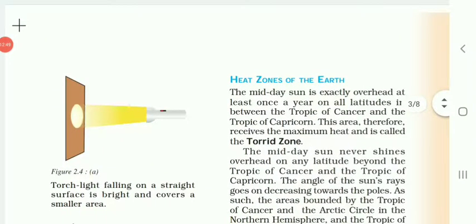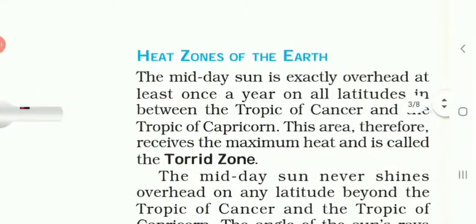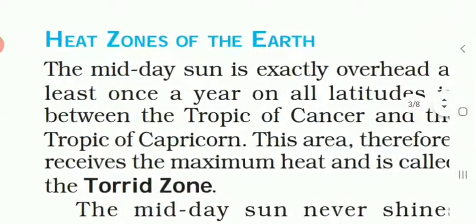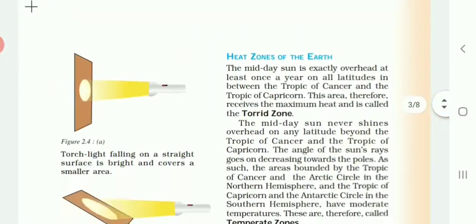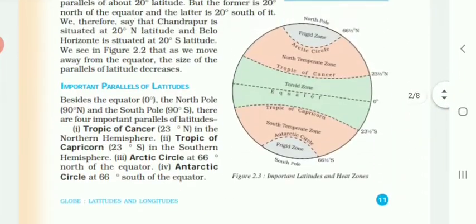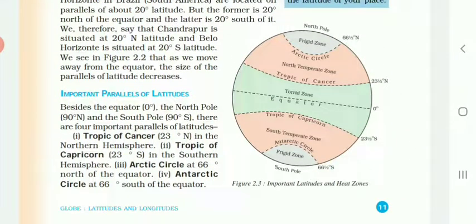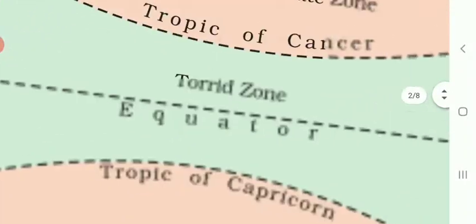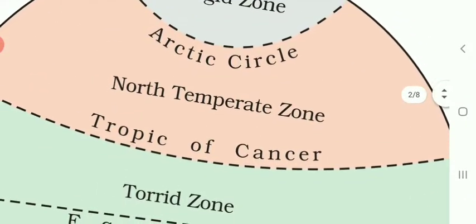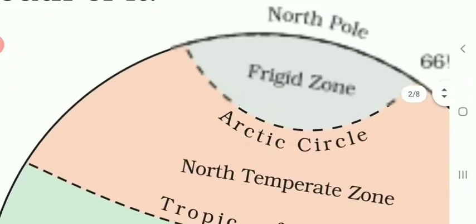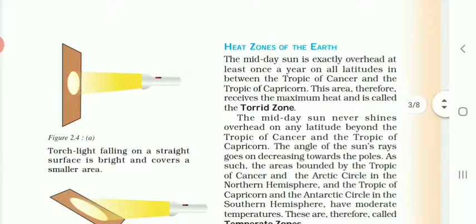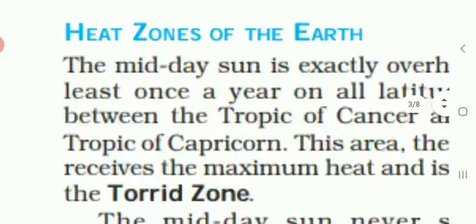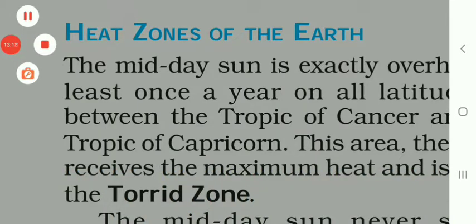In the next period, we are going to see the different heat zones of the earth — the Torrid Zone, the Temperate Zone, and the Frigid Zone. These are the three heat zones of the earth, and we will understand them in the next period. Thank you very much.